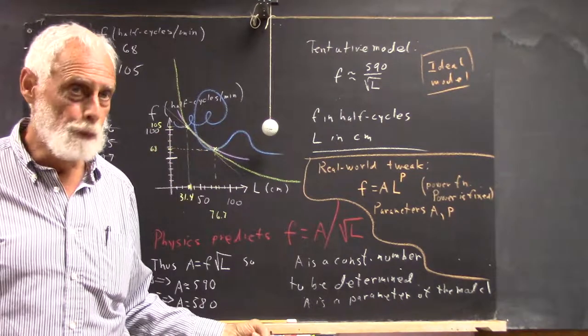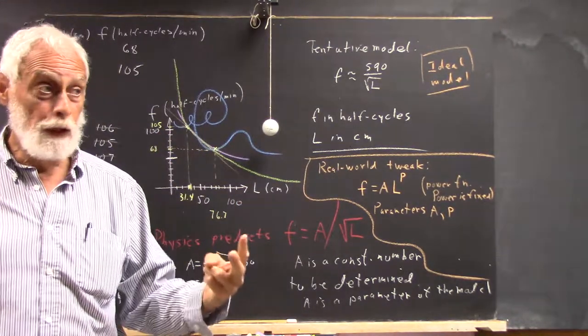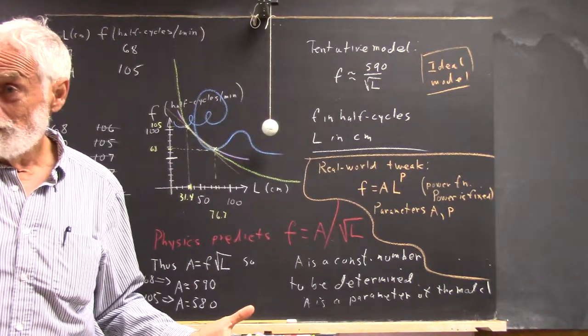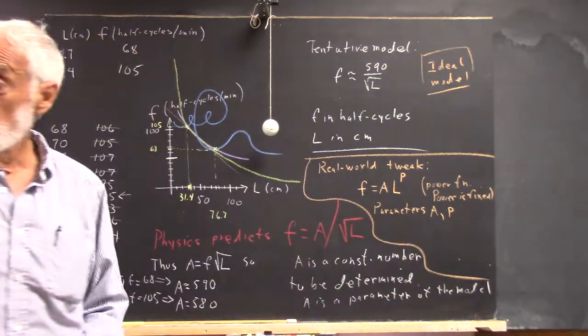How many parameters do we have? That's two unknowns. Two equations and two unknowns. And then we solve that equation. So we're going to do that. Can you write down the equations?